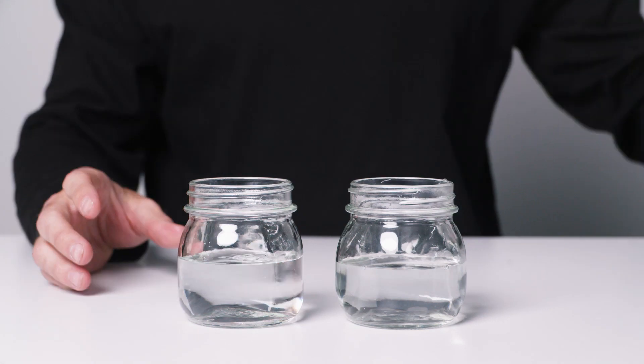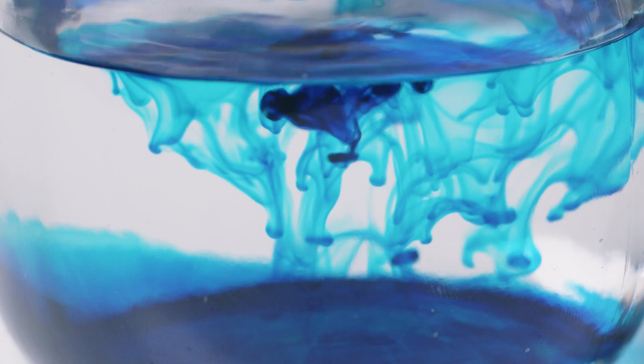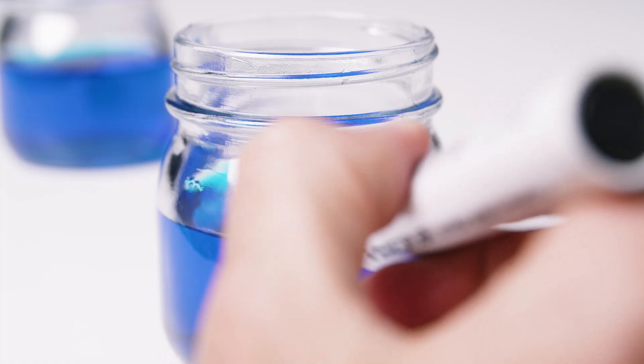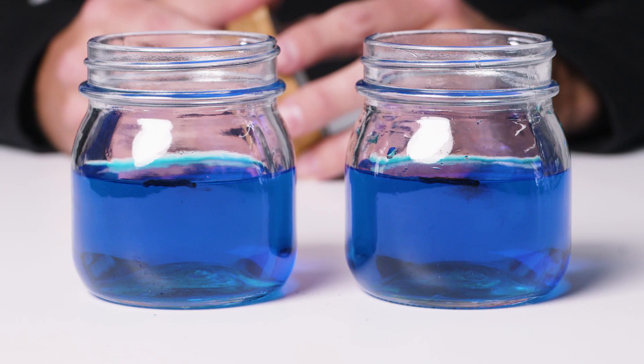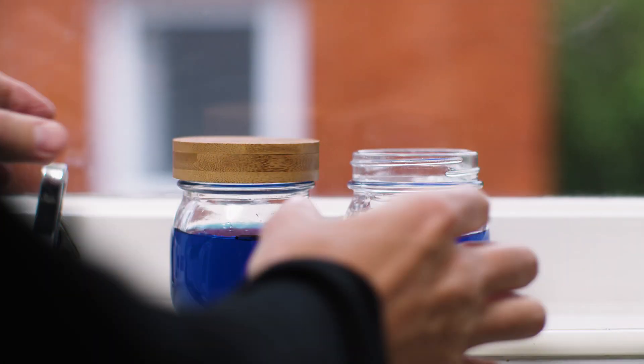Fill two jars with water and make sure you have equal amounts of water so it's a fair test. Add drops of blue food colouring. Mark each jar so you can observe and measure changes over time. Place the lid on one jar and put both on a sunny windowsill.